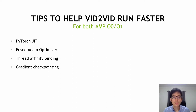To help Bit2Bit run faster, we have four tricks: using JIT, Fused Adam, Thread Affinity Binding, and Gradient Checkpointing. These tricks are actually useful for both AMP O0 and O1, so no matter which you use, this should help the video synthesis framework run faster.